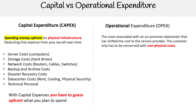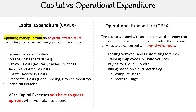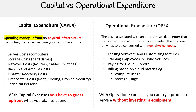For operational expenditures, the costs associated with an on-premise data center have now shifted to the service provider, so you only have to worry about non-physical costs. This includes leasing software and customizing features, training employees, customer service, paying for cloud support, and billing based on cloud metrics like compute usage and storage usage. With operational expenses, you can try a product or service without having to invest in the equipment, so you can spend more time on things that matter to grow your business and you don't have to immediately commit to a bunch of stuff — you have a lot of flexibility. That's the huge difference.